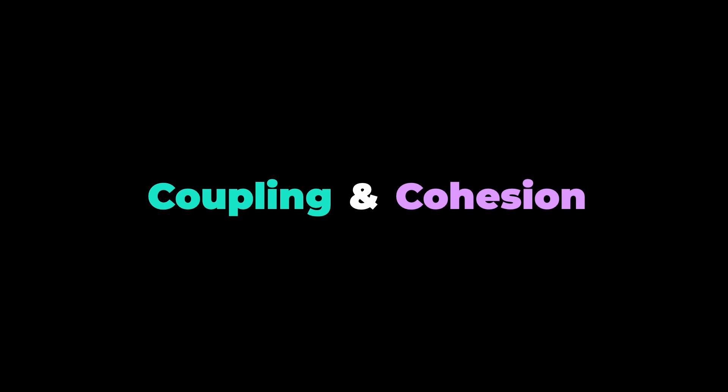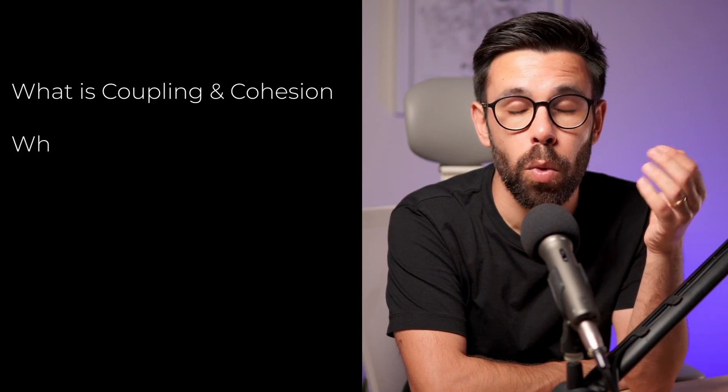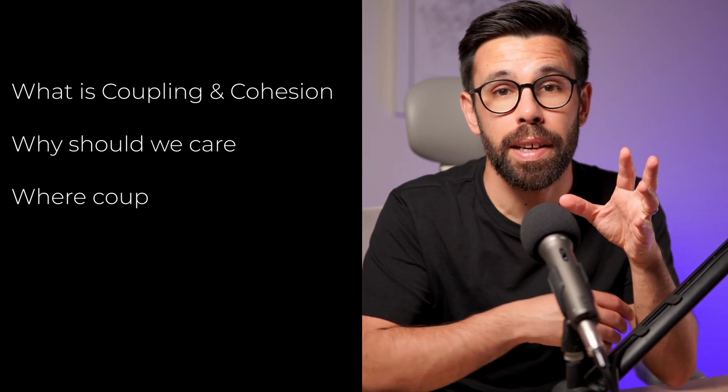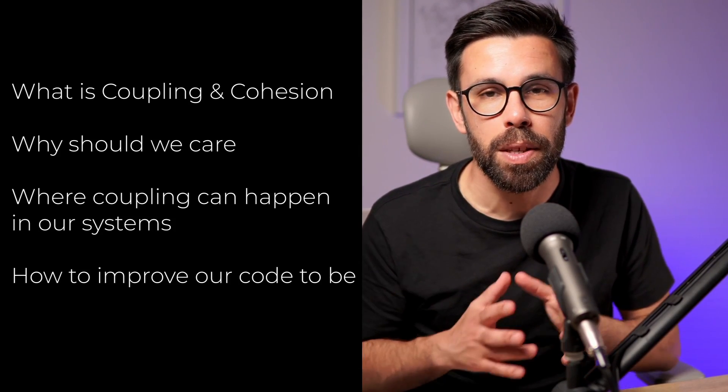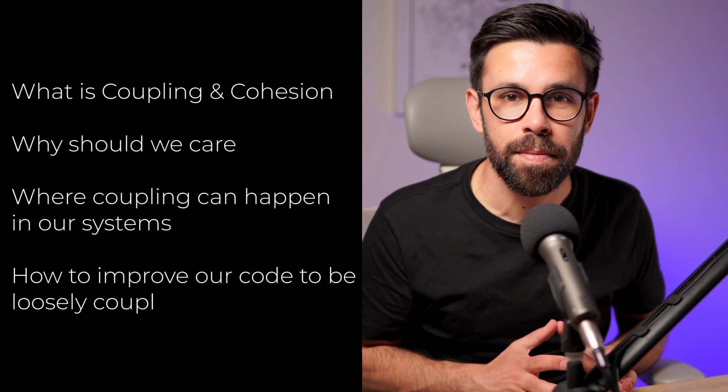I have to confess that writing maintainable code was hard until the moment I finally understood what coupling and cohesion mean. Those two metrics alone say a lot about the maintainability of your source code, and that's why in this video I'll explain what coupling and cohesion are, why we should care, where coupling happens inside our systems, and how to improve our code to be loosely coupled and cohesive.